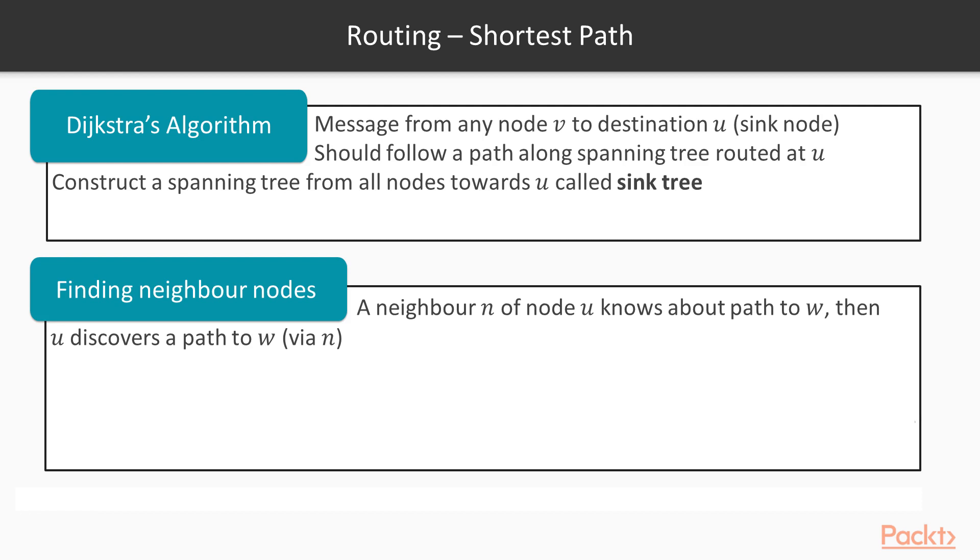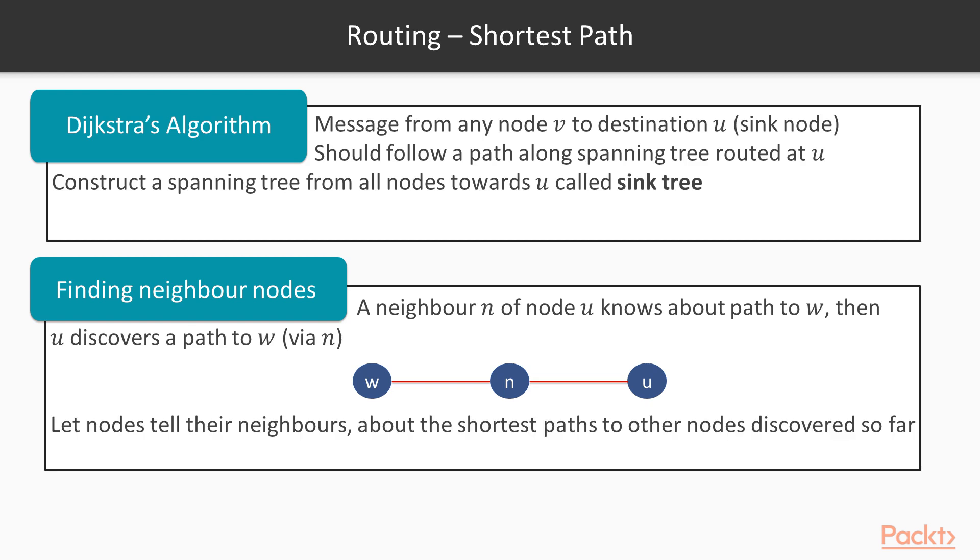If a neighbor n of the node u knows about a path to another node w, then u discovers a path to w via node n. Node n knows about w and it informs it to node u. Eventually, we are going to let nodes tell their neighbors the shortest path to other nodes discovered so far.